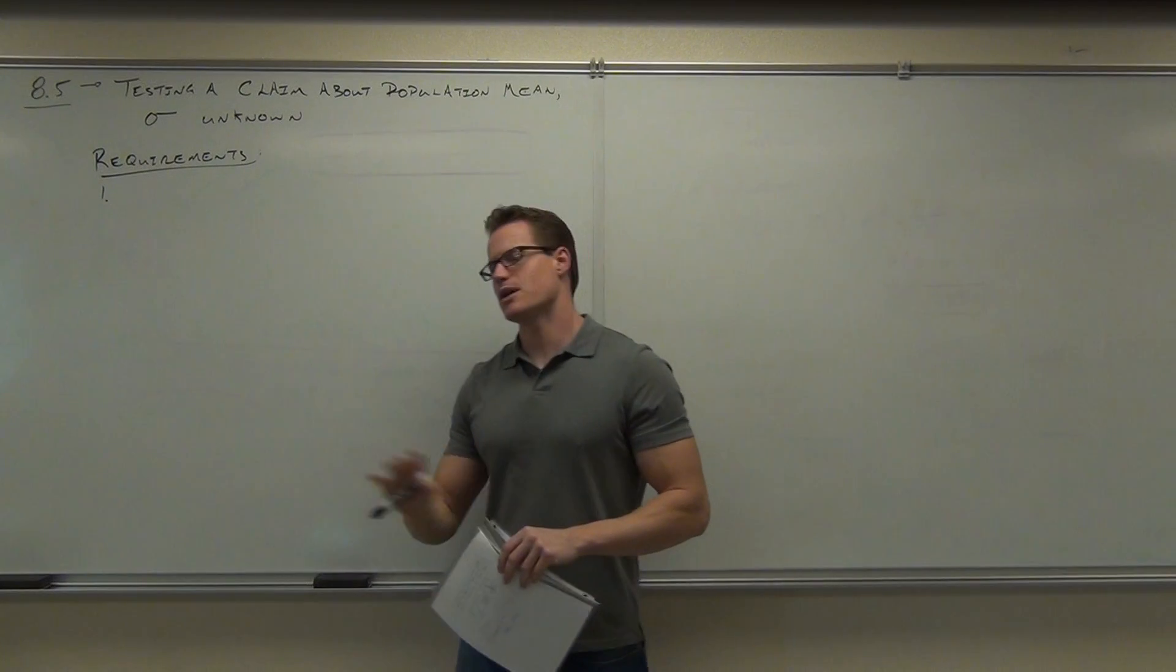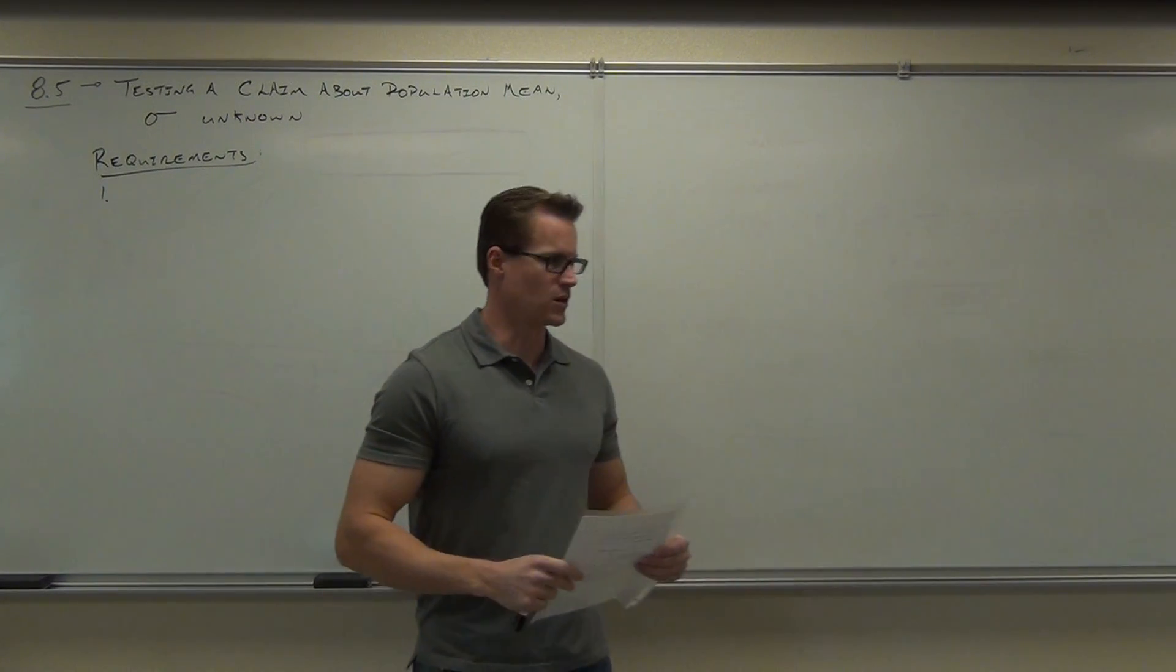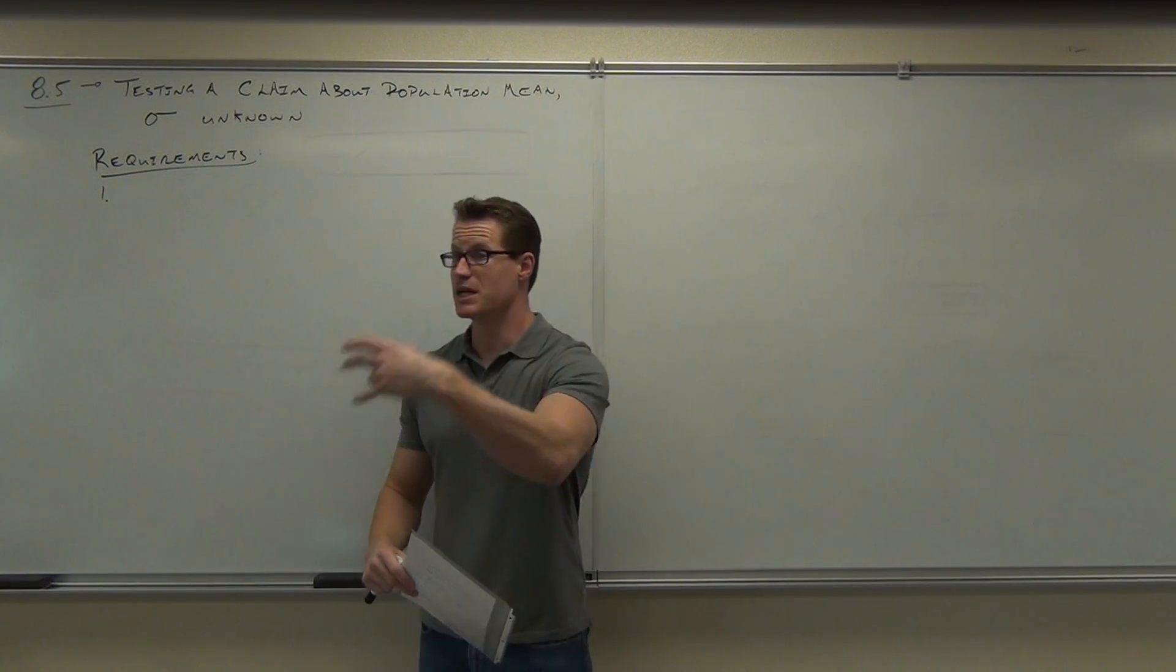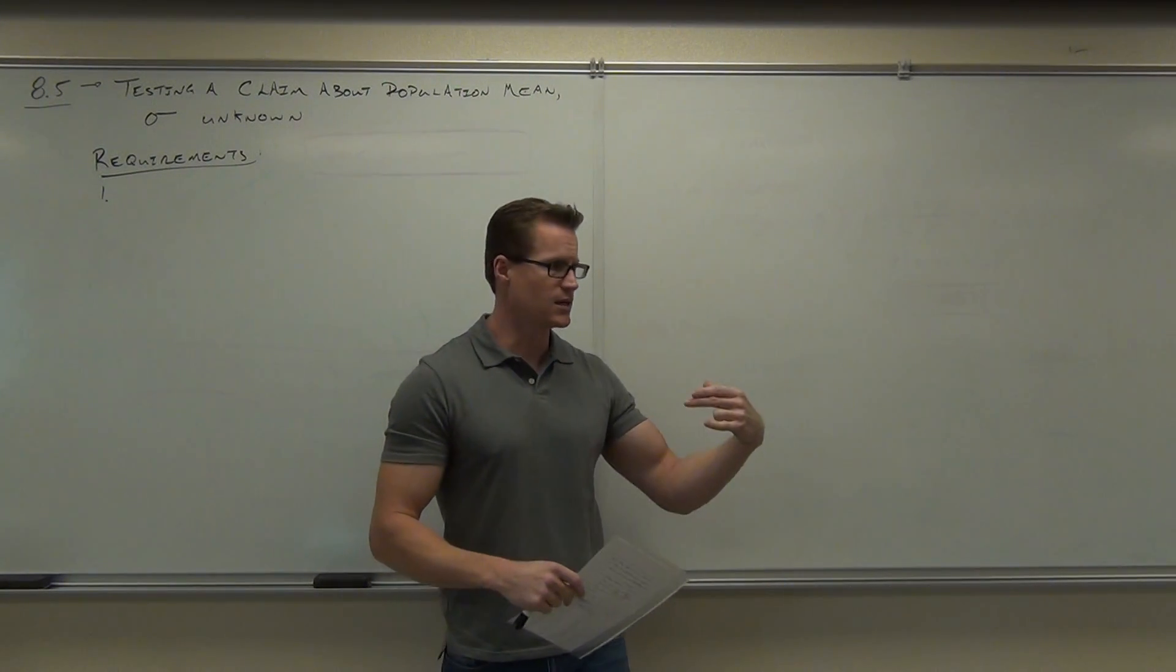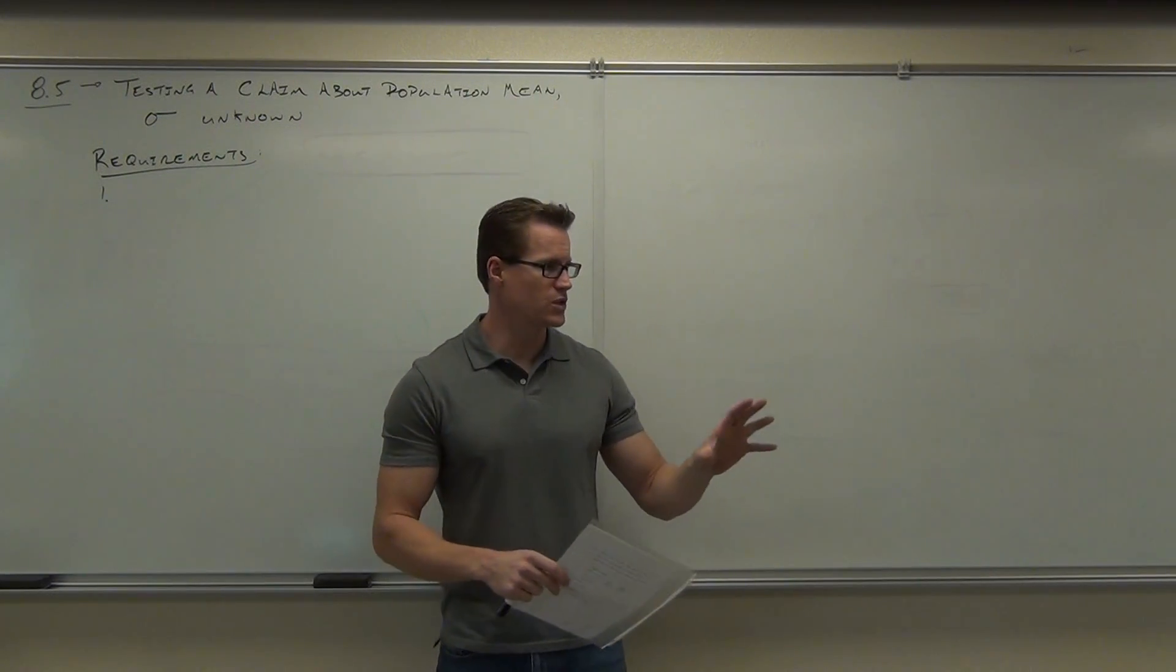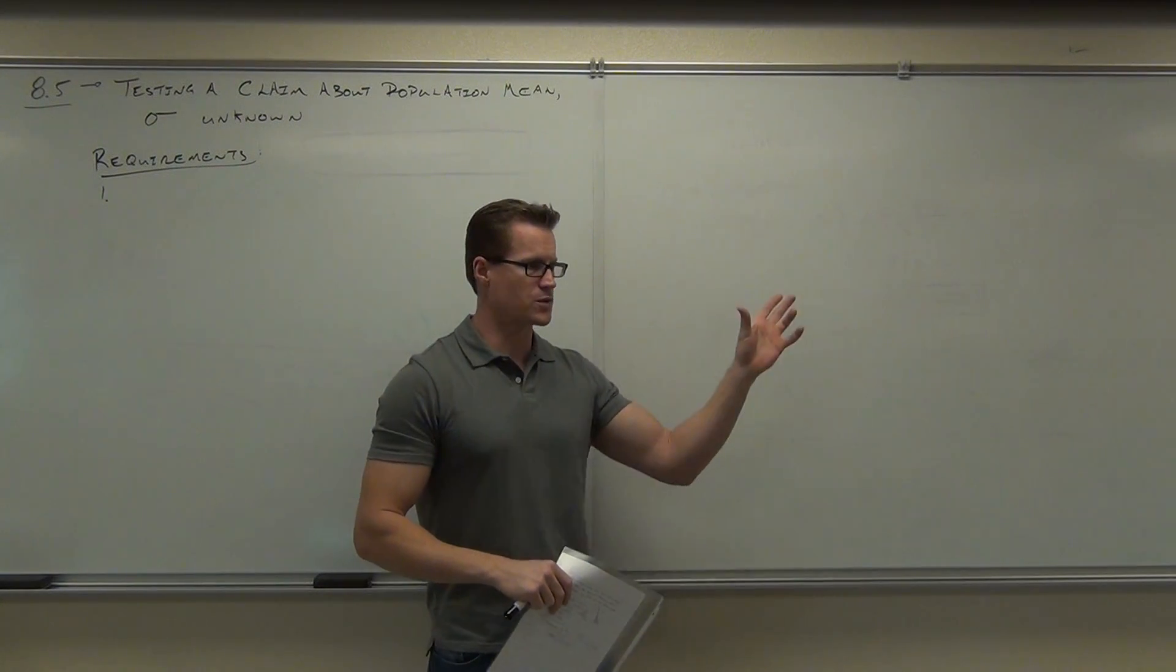Yeah, so it all comes down to, again, just like Chapter 7, very similar order of steps that we took here. First it was proportions, then it was mean knowing sigma, now it's mean not knowing sigma: Z, Z, T. Okay, so pretty much it's up to you to know the difference between a proportion and a mean. Proportions are Zs. Means, you have two options.